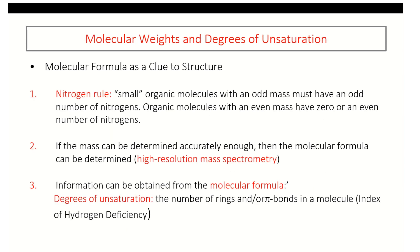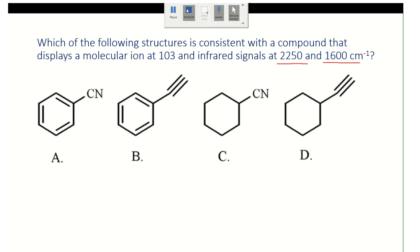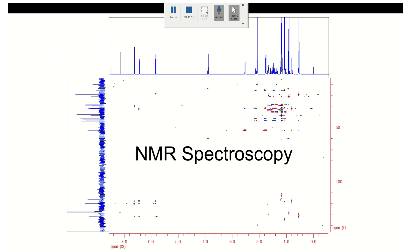To summarize: remember the nitrogen rule, high-resolution mass spectrometry, and degrees of unsaturation. The next time we meet, we'll be talking about NMR spectroscopy.